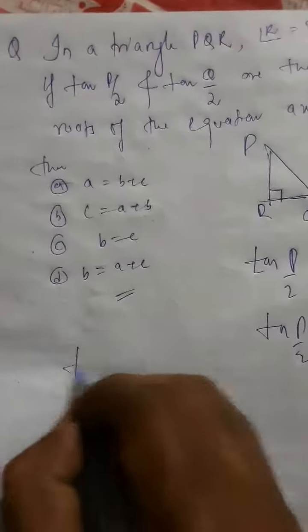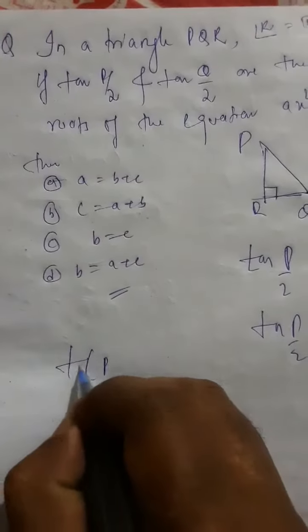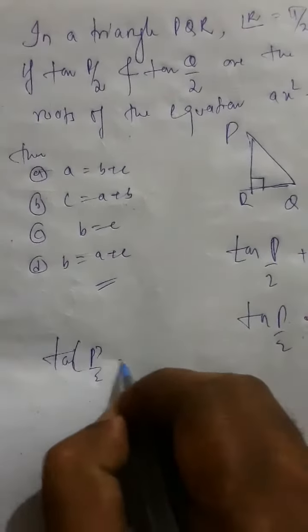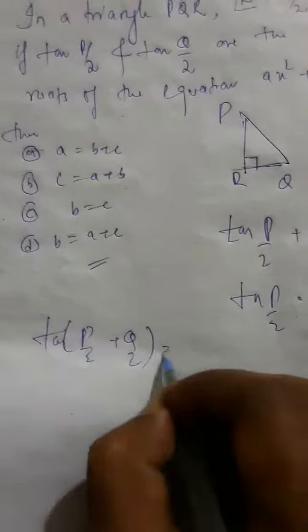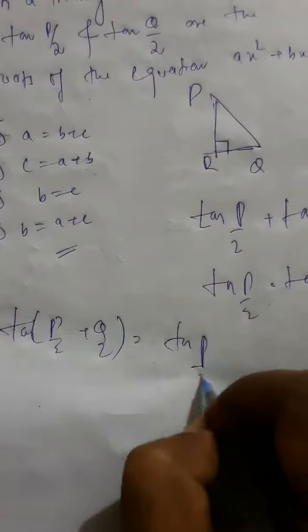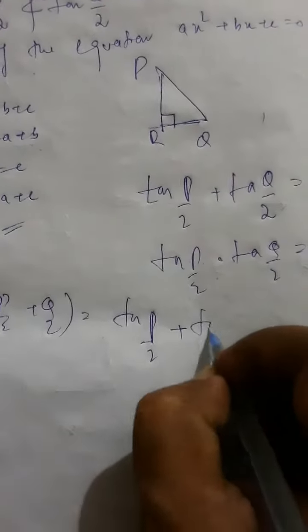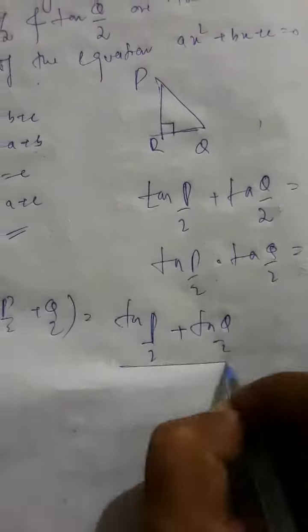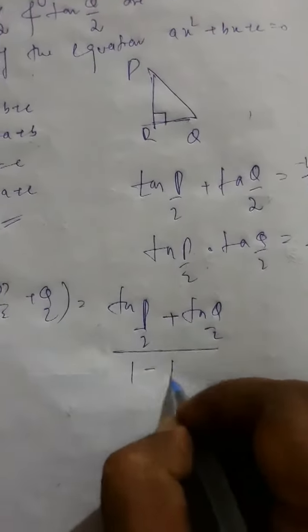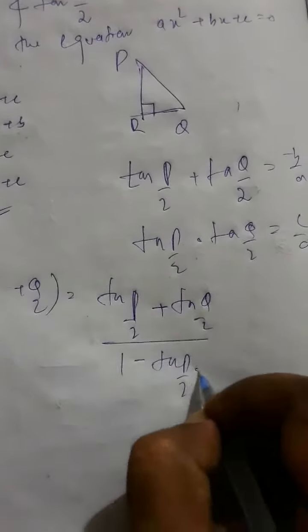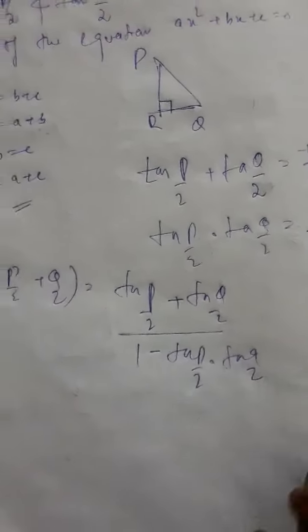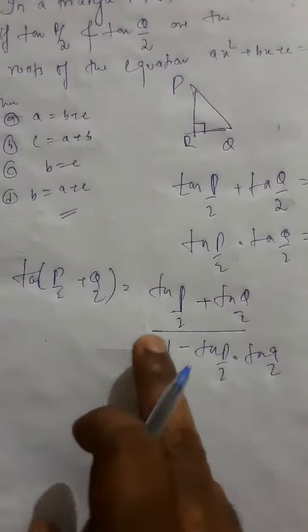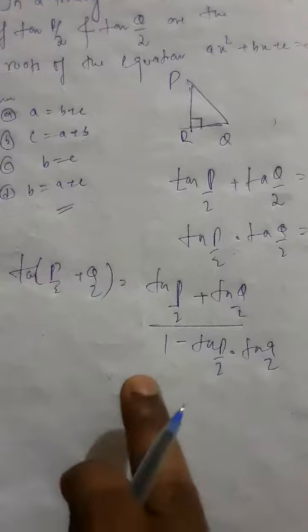Now, we will proceed the solution like this: tan of P by 2 plus Q by 2 is equal to tan P by 2 plus tan Q by 2 whole upon 1 minus tan P by 2 into tan Q by 2. This is of the form tan of A plus B is equal to tan A plus tan B whole upon 1 minus tan A tan B.